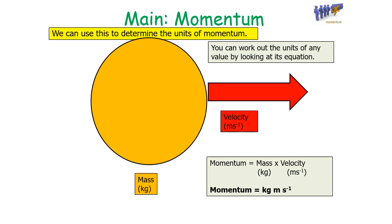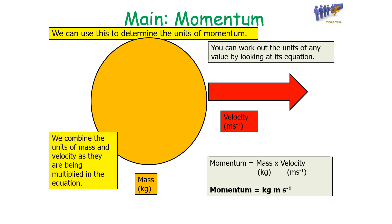We can also use the momentum equation to work out its units. Because momentum equals mass times velocity, the units of momentum are kilogram meters per second (kg·m/s), combining the units of mass and velocity as they are multiplied in the equation.